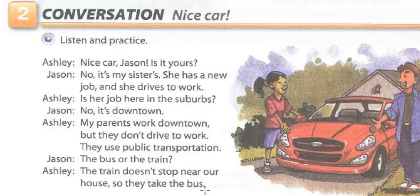Okay, that was the conversation. Nice car. So, nice car, Jason — Bonito carro, Jason. Is it yours? ¿Es tuyo? No, it's my sister's. No, es de mi hermana. Este apóstrofe S indica posesión — no es el verb to be, sino el posesivo, posesión.